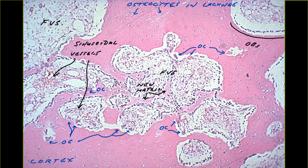Osteoblasts — the row of large, dark-stained cells — predominantly line the borders, elaborating the pink-stained adjacent matrix, new osteoid not yet mineralized. This mass of cells is once again a fibrovascular stroma — a blastema, the cellular engine for making bone. The vessels are marked by numerous red blood cells in small capillaries and larger sinusoidal spaces, whose thin, permeable walls are the ideal circulatory environment for bone formation.